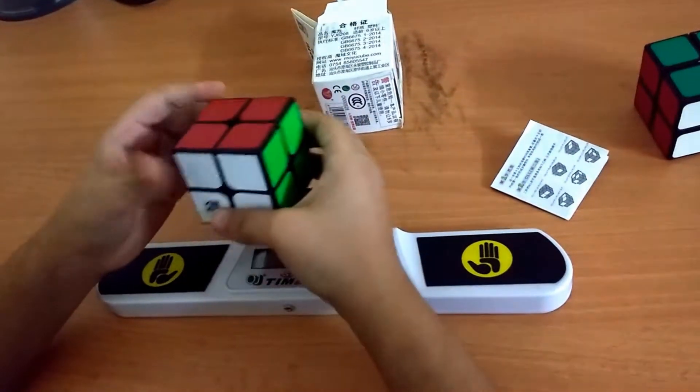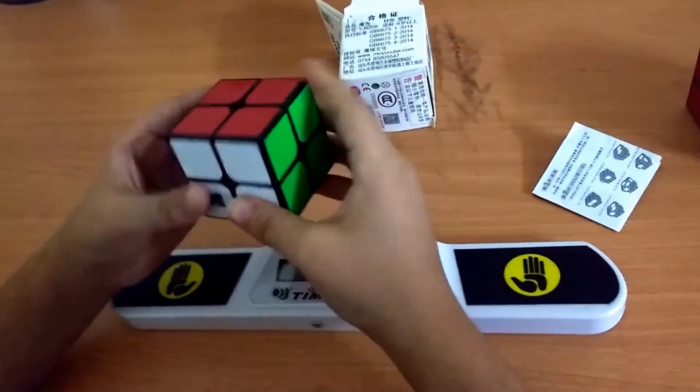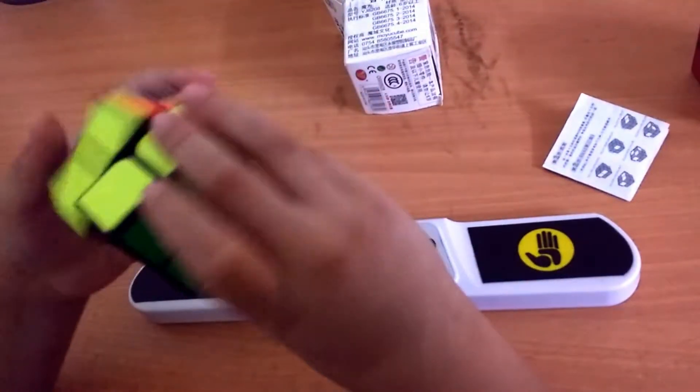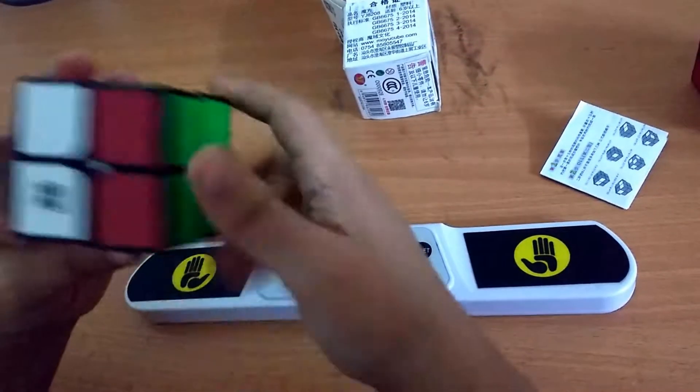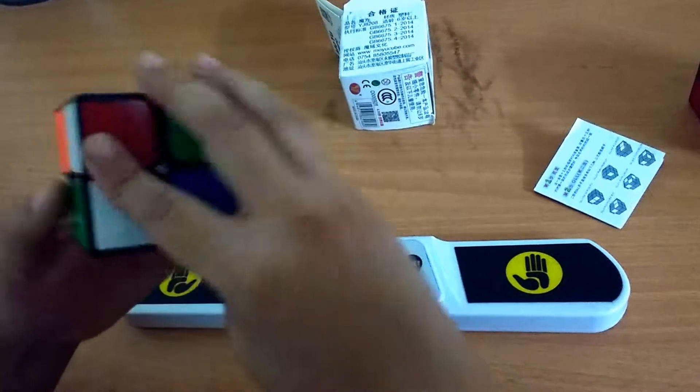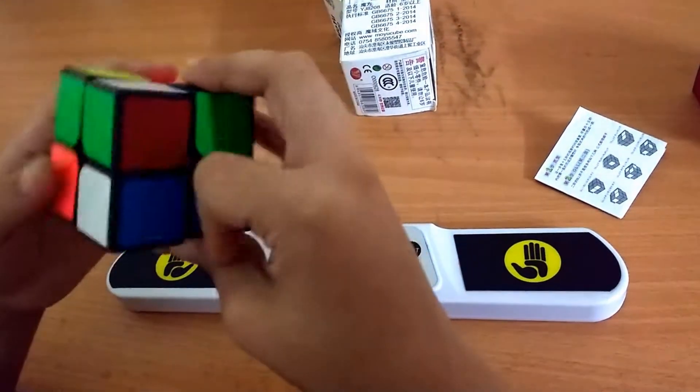Now the last category is the stickers and the color recognition. Personally, I like Moyu shades, so I have had no problem with recognizing stickers, and I actually enjoy that the cube stickers are almost at the boundary.